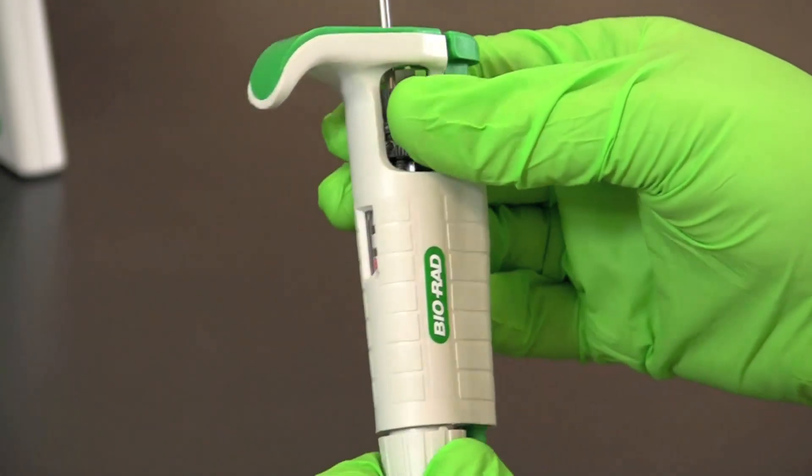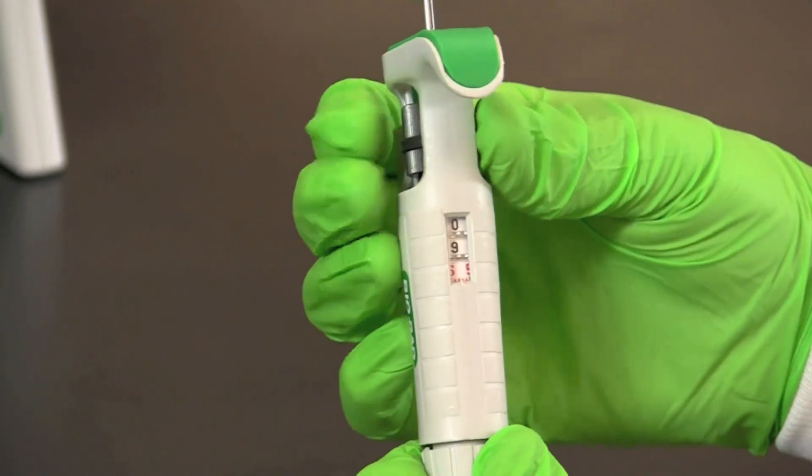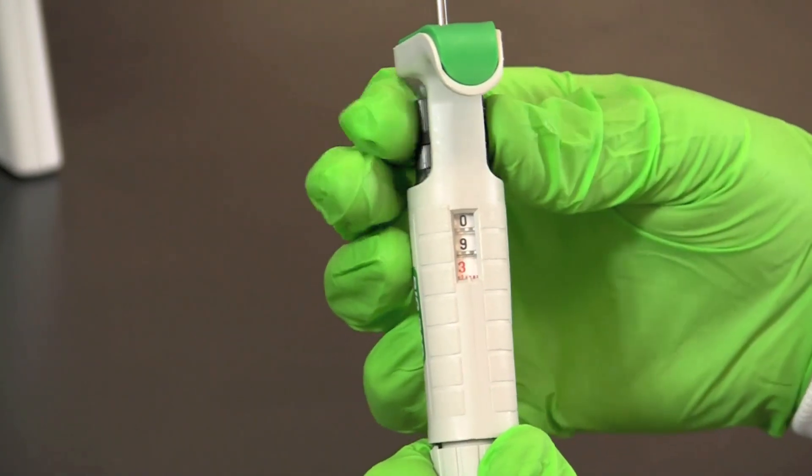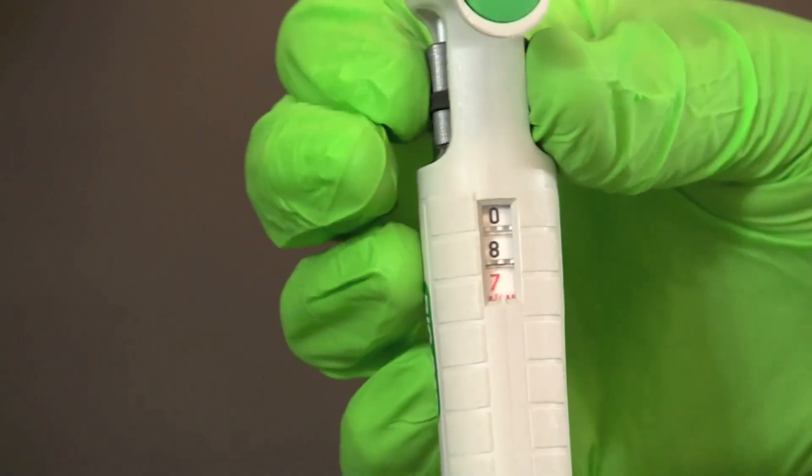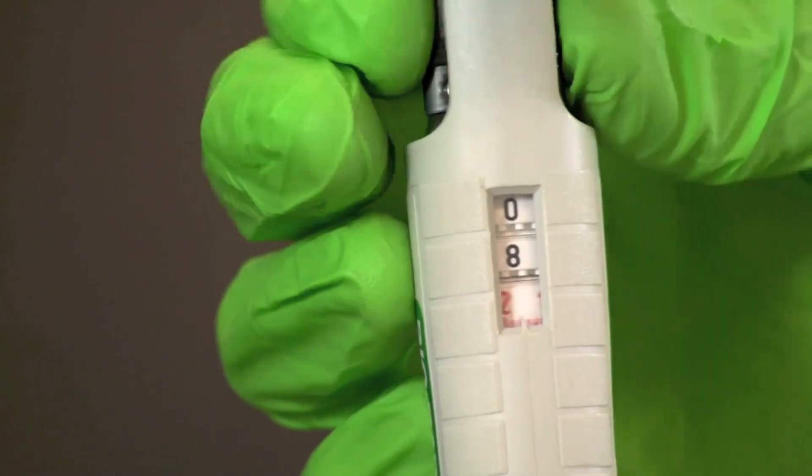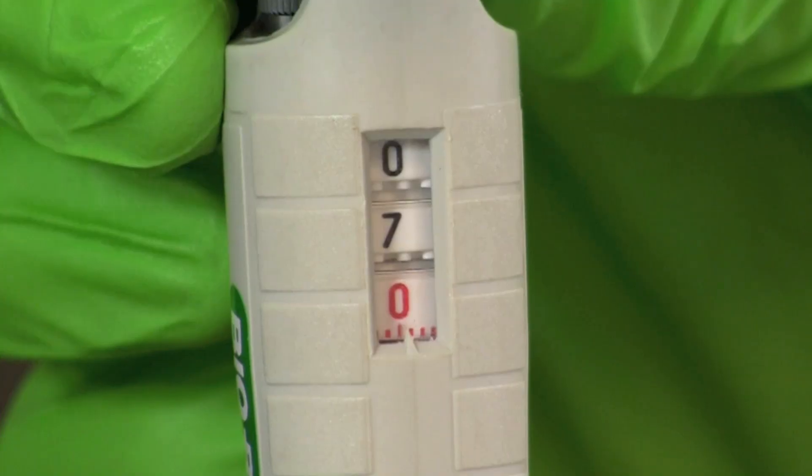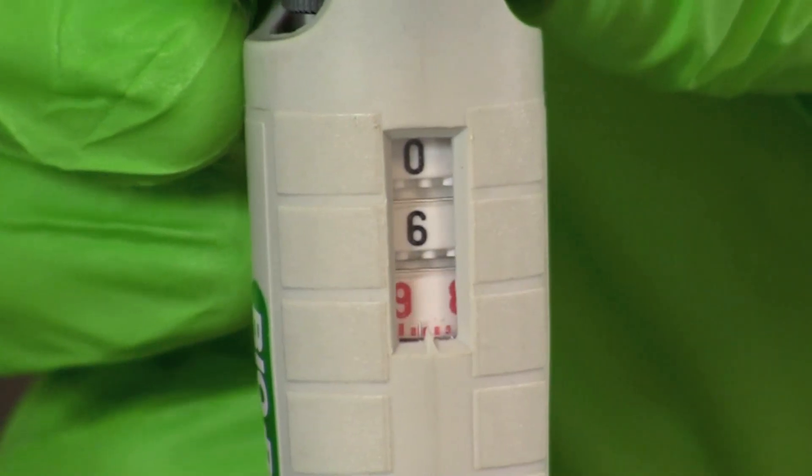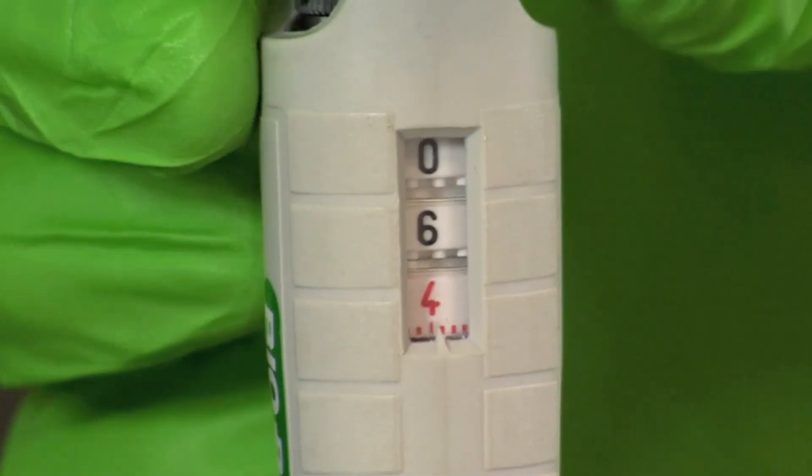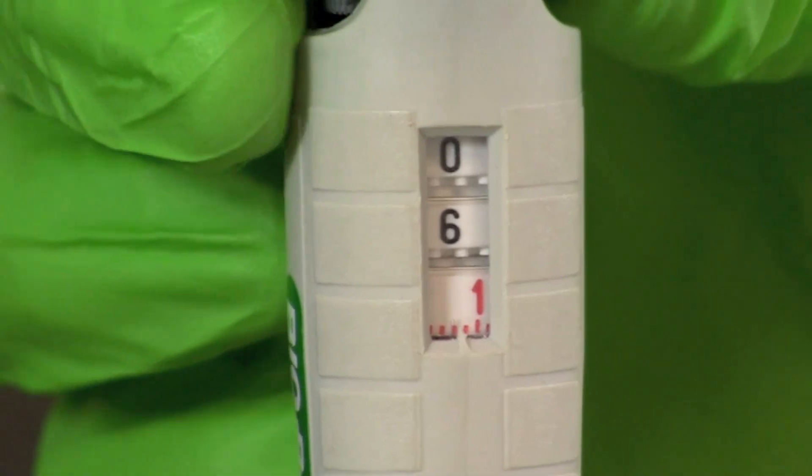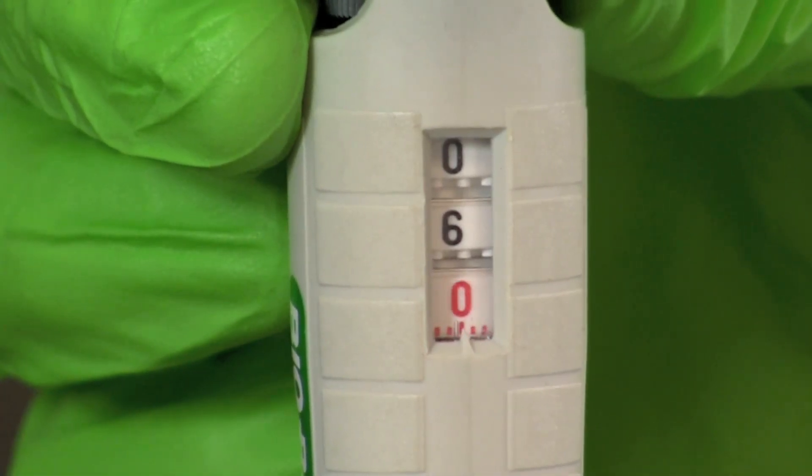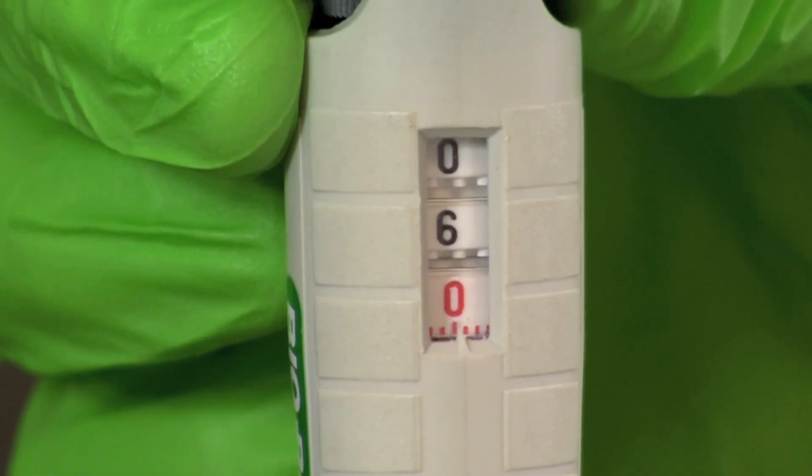Prior to putting on a tip you should first set your pipette to the desired volume. To set the volume simply turn the volume adjustment knob until the desired volume appears in the digital display window. The volume is read from top to bottom. In the case of this 2 to 20 microliter pipette the bottom digit in red indicates tenths of a microliter. Here we have displayed the correct setting for obtaining 6 microliters of sample.